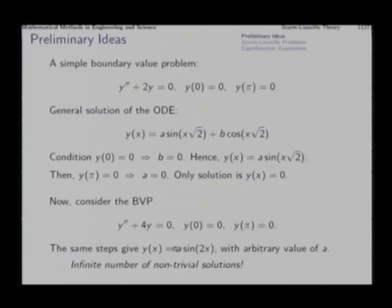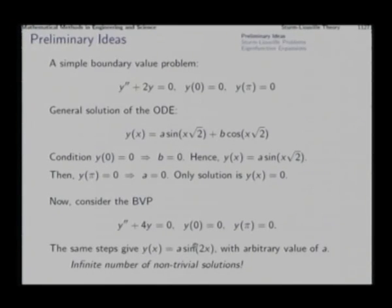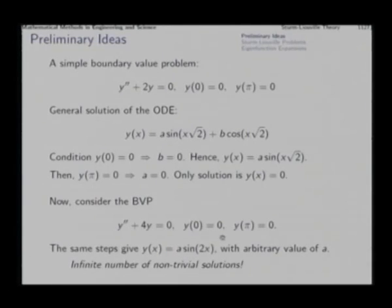In the first case we could find only the trivial solution — there was no non-trivial solution at all. In this second case we have got an infinite number of non-trivial solutions, with a non-trivial solution for every value of a.